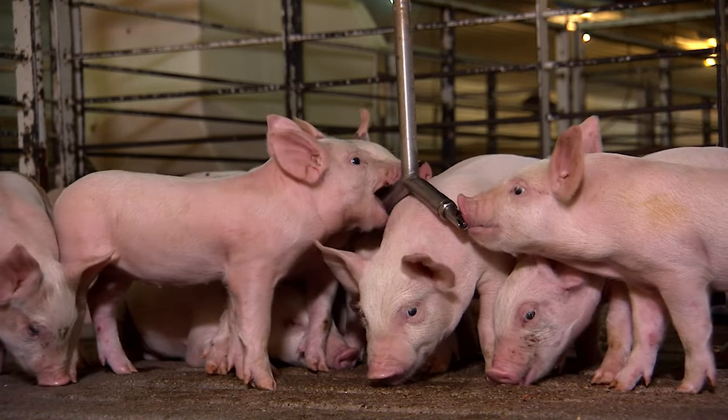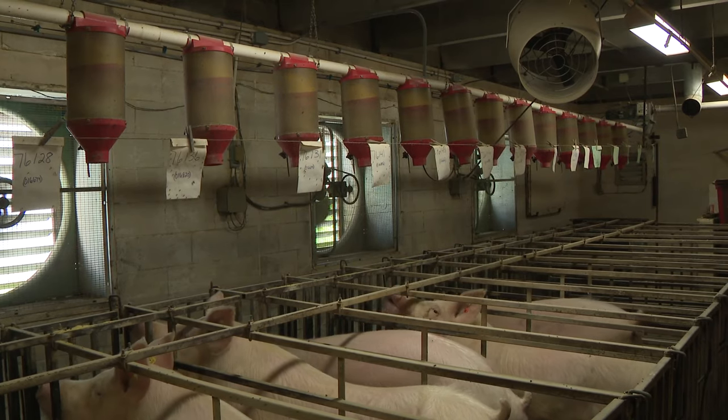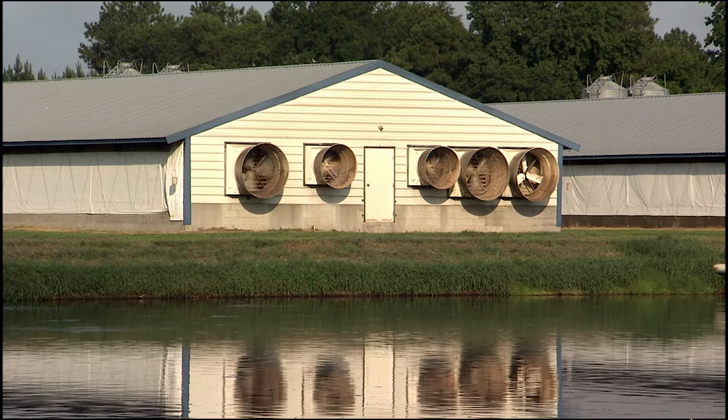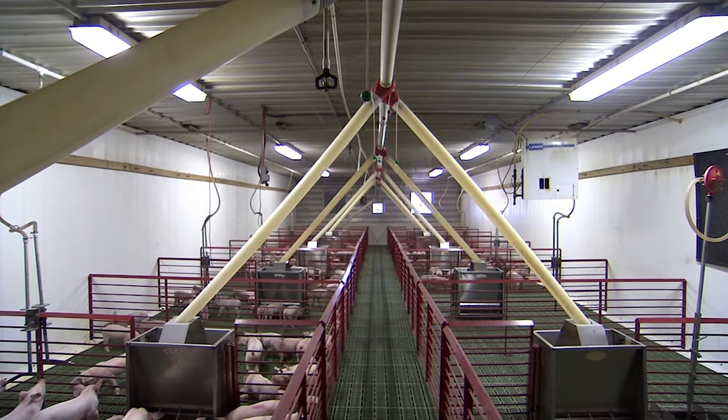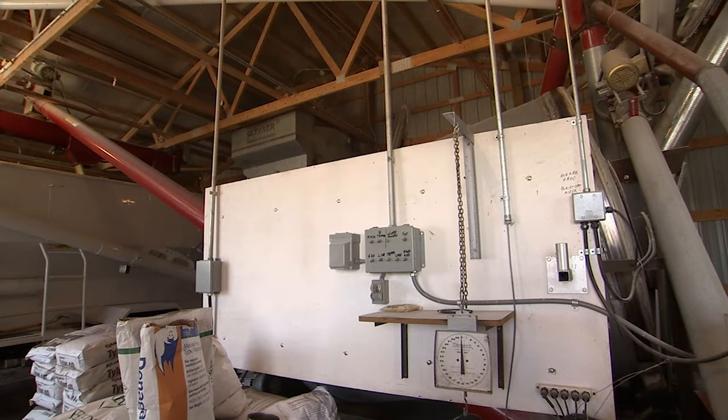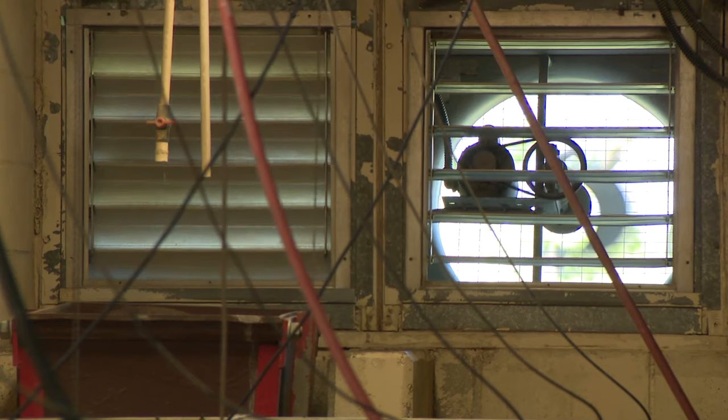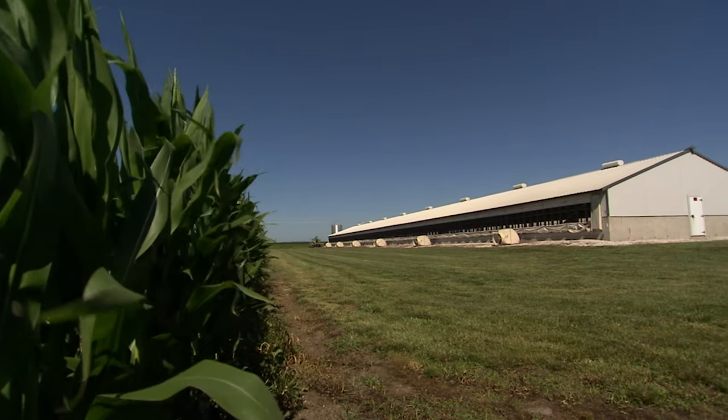We're going to look at an example of a swine operation. And swine operations have a number of large loads that can run simultaneously at times. Those could be ventilation, water pumping, feeders, lighting, all of which are very large loads. And when those combined run at the same time, we can set demand at those times. And so we're going to look at an example where maybe savings could be identified with respect to demand.